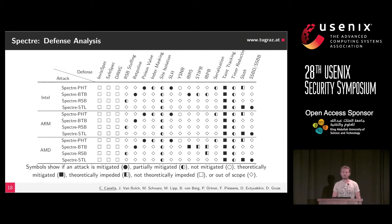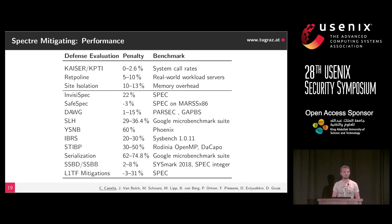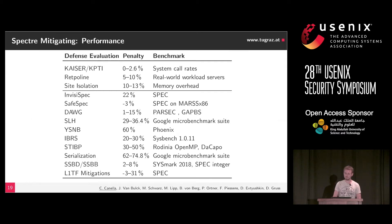We need some combination of defenses to protect our systems. We then looked at performance — how much do those defenses cost? Because if they are ineffective and cost a lot of performance, why use them at all? We evaluated performance impact on real-world systems using benchmarks. For instance, with serialization, we see a 62% to 75% decrease in performance. Serialization is a defense where the developer must manually add the serializing instruction, for example in the kernel.